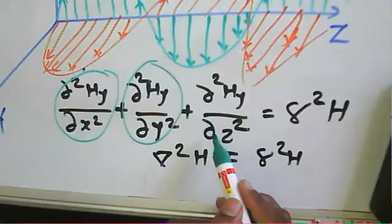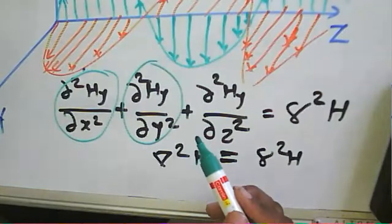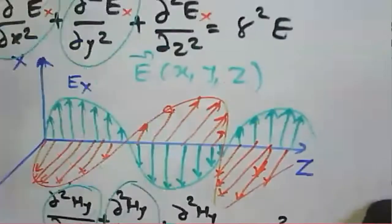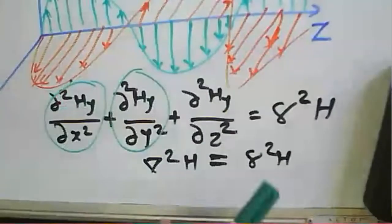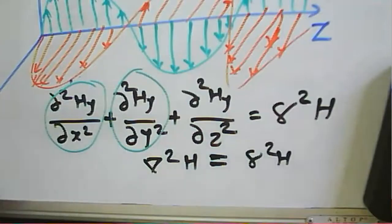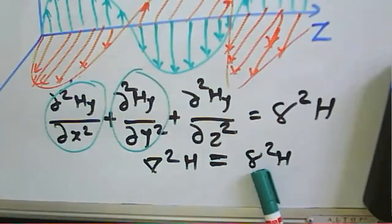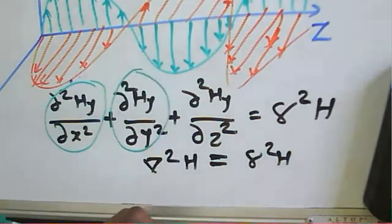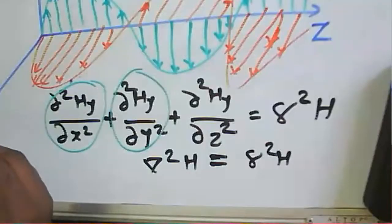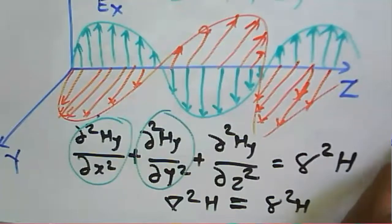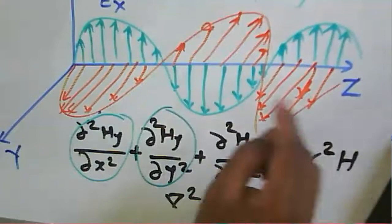The wave is propagating in the z-direction. The variation of the electric field component E_x and the magnetic field component H_y are both with respect to z. From these wave equations, by substituting propagation constant values for different media, we can directly obtain the components of the electric field and magnetic field.